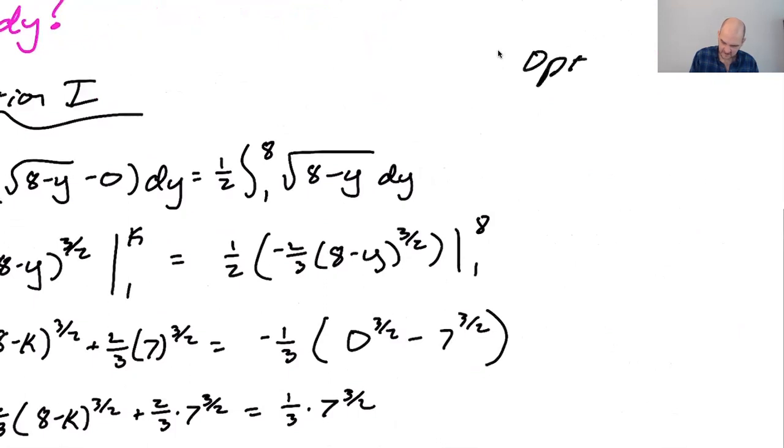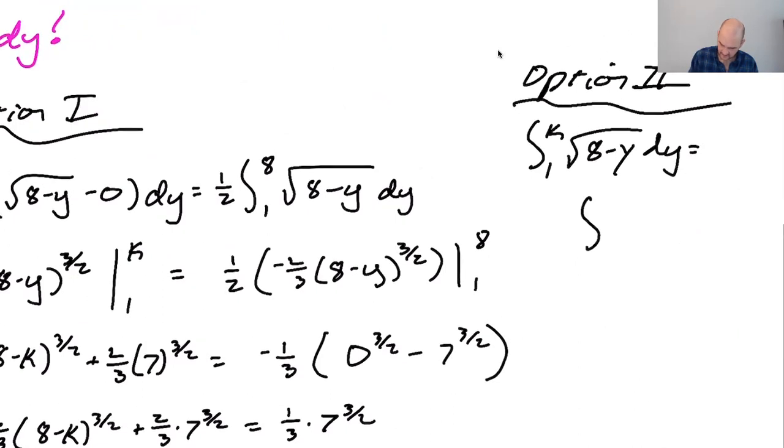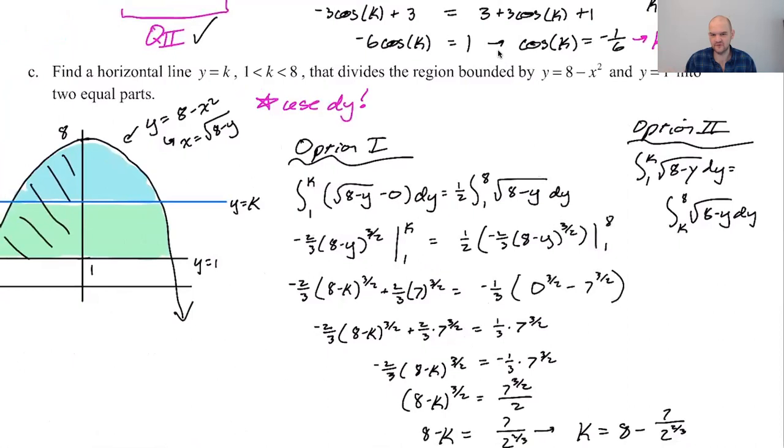Option two. I'll just write it down. Would have been the integral from 1 to k of radical 8 minus y dy equals the integral from k to 8 of radical 8 minus y dy. And if you want to get involved in solving that problem, go for it.